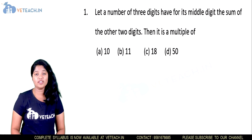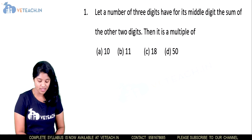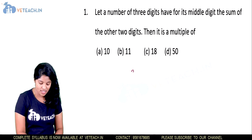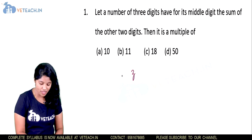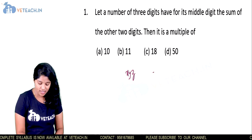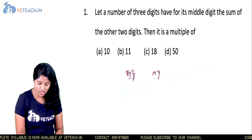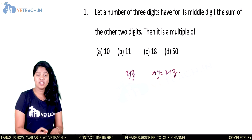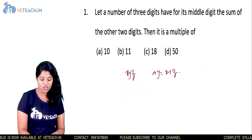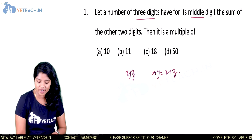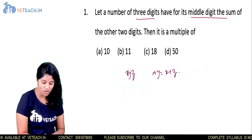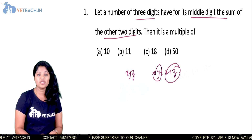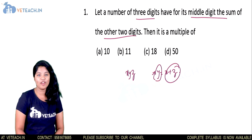Before going into that, we know the divisibility rule of 11: if the digits are x, y, z, then y equals x plus z. Since in the given question the three-digit number has its middle digit equal to the sum of the other two digits, it satisfies the divisibility rule of 11.